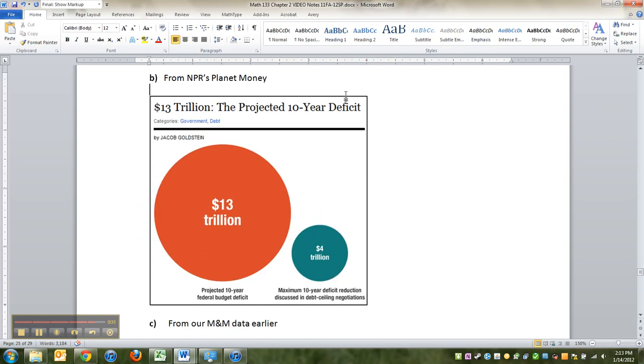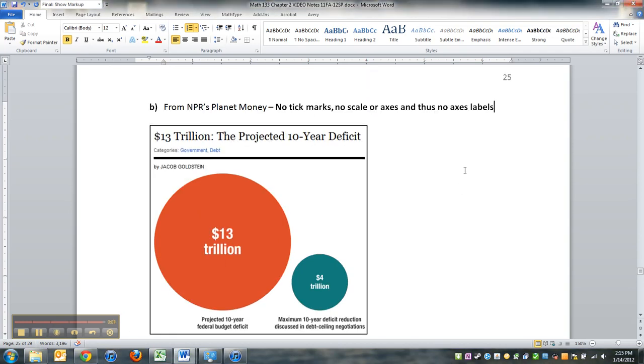And then we have this one. This one's from Planet Money. And it's a disaster because you have these two circles. But of course, circles don't exactly grant scale. So there's no tick marks. No scale. Circles are actually okay, as long as you grant a circle scale somewhere in a legend. And this doesn't have that. There we go. No tick marks, no scale, no axes, no axis labels. It's a mess.